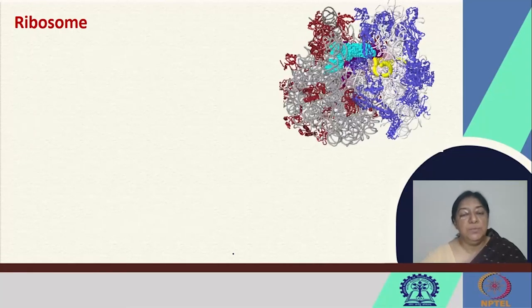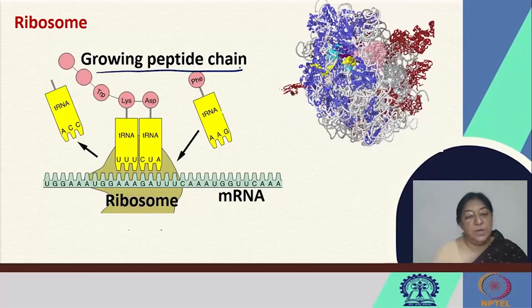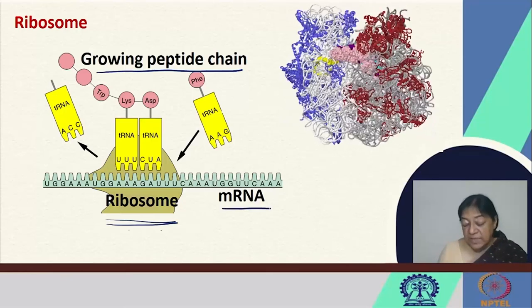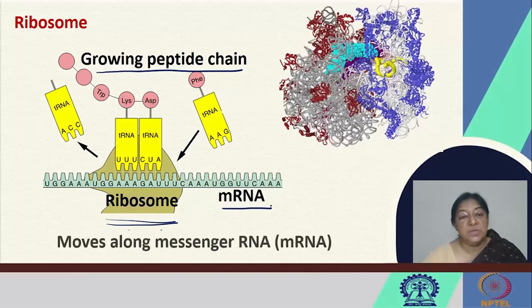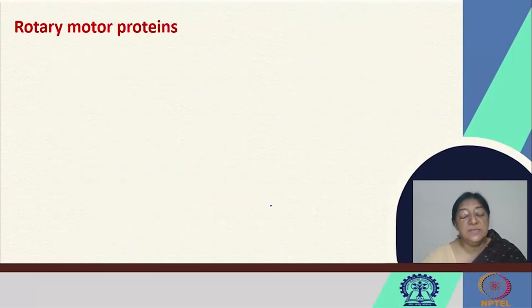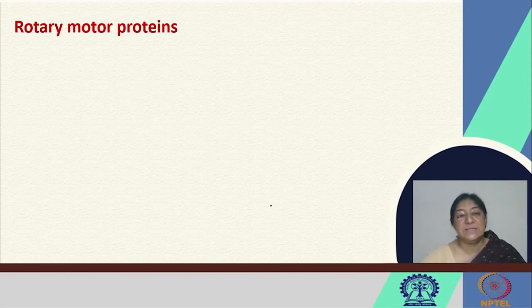The ribosome is another very important protein involved in the development of the growing peptide chain. We have the ribosome machinery for the formation of the peptide chain and the mRNA template. In the nucleic acid type motor proteins, we looked at the different polymerases, helicase, gyrase, topoisomerase, and the ribosome, which we will revisit later when looking at protein-nucleic acid interactions.